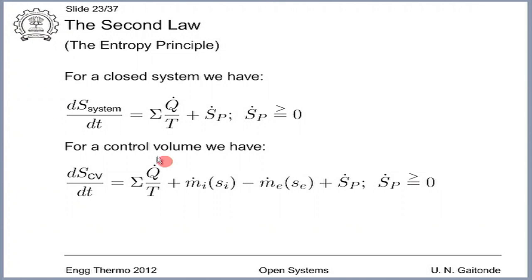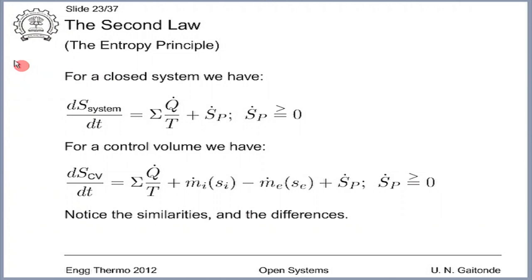Notice that, as in the earlier two equations — conservation of mass and conservation of energy — we have two appropriate terms added on the right hand side. On the left hand side, the subscript 'system' has been replaced by 'control volume'; otherwise nothing else has changed. I recommend that you spend time on this so that you appreciate the similarity and the small specific differences which exist between the two.